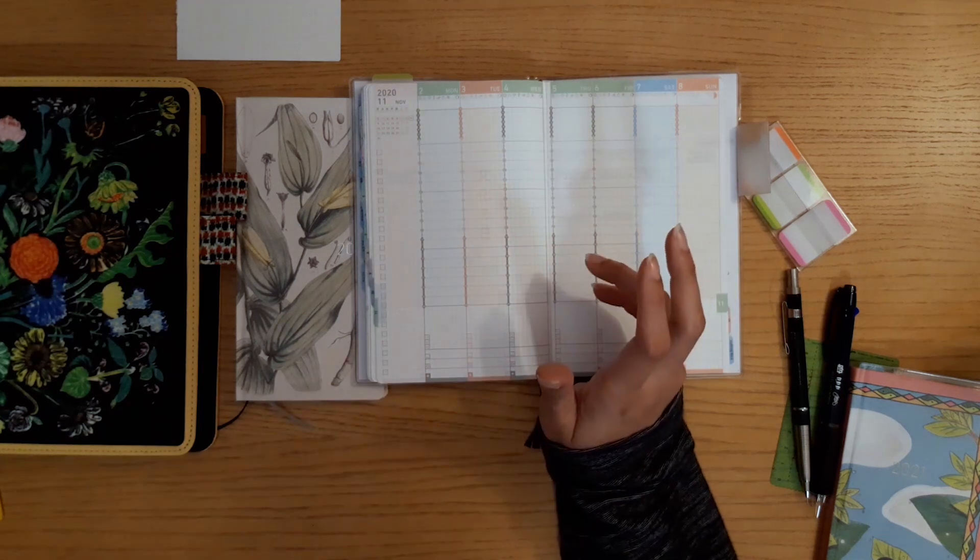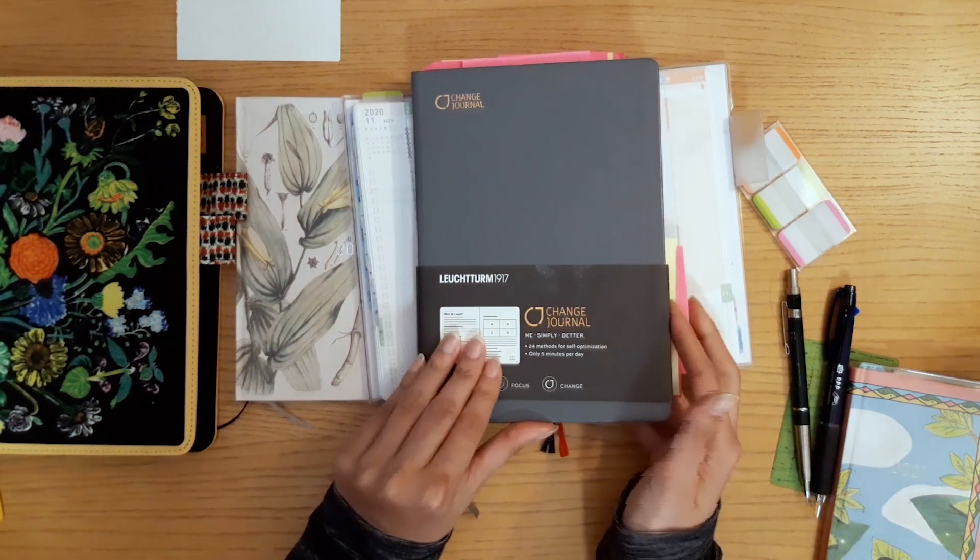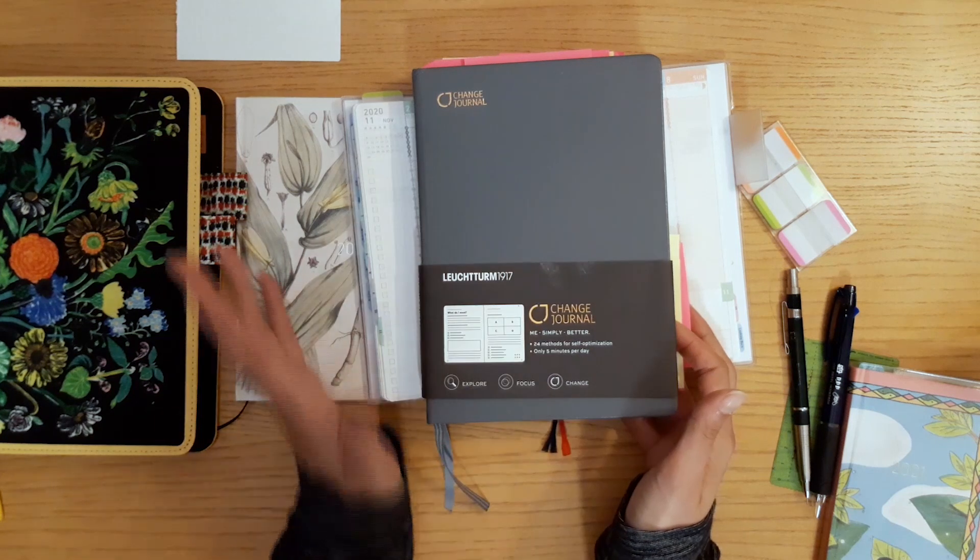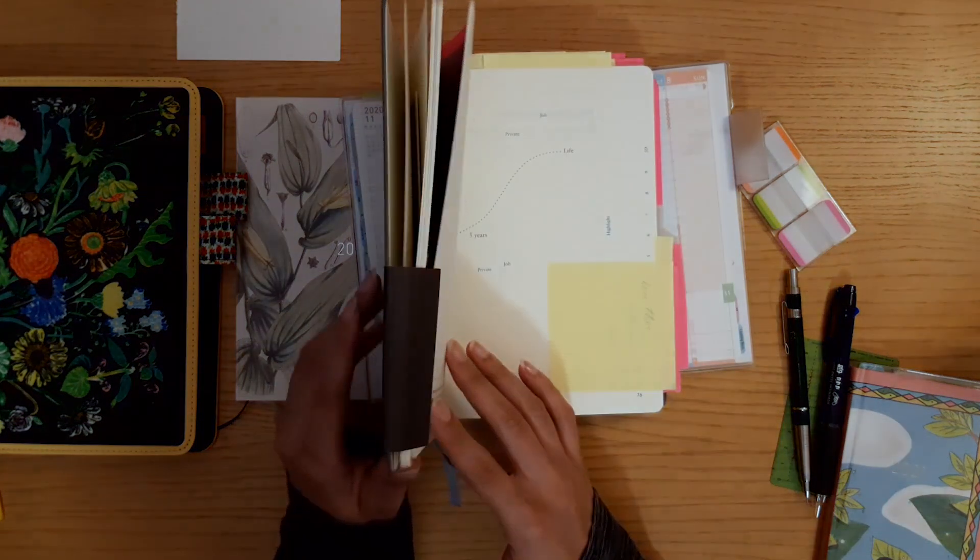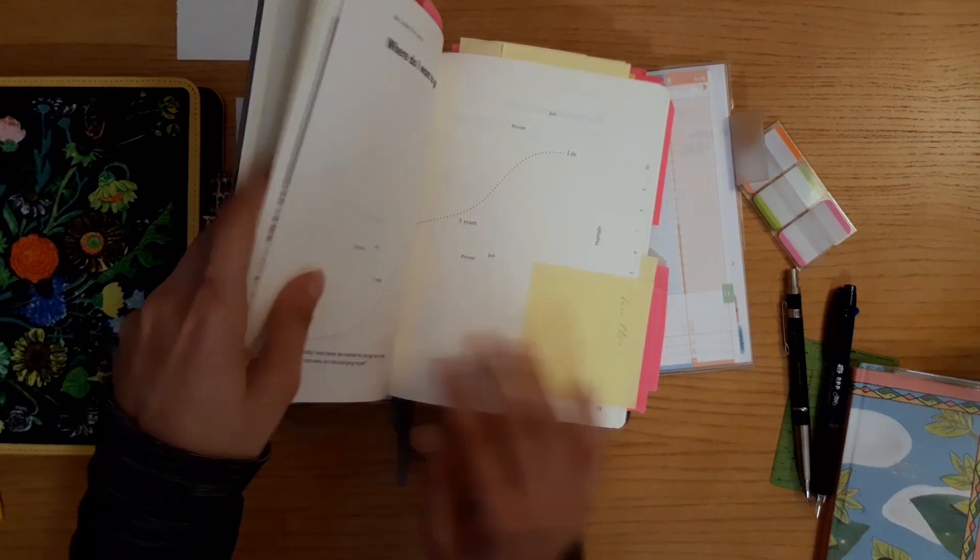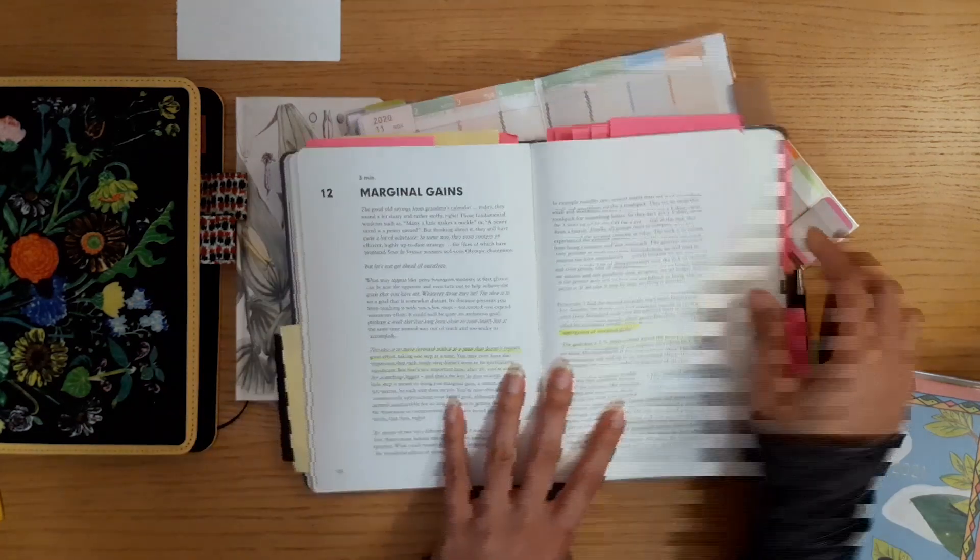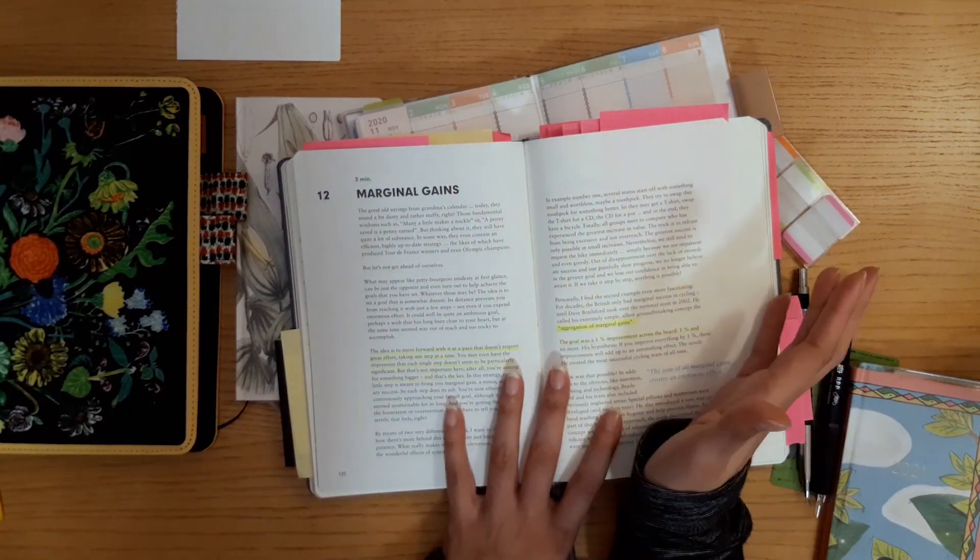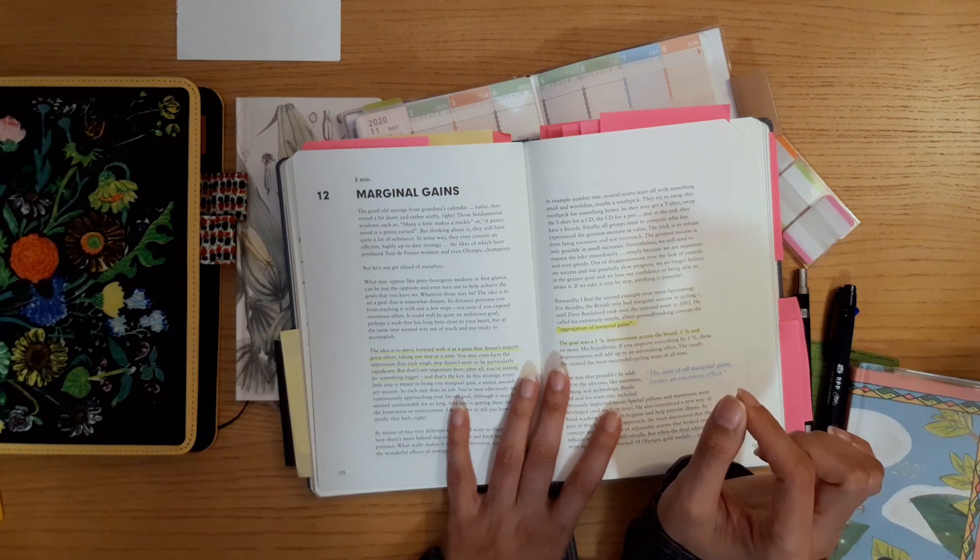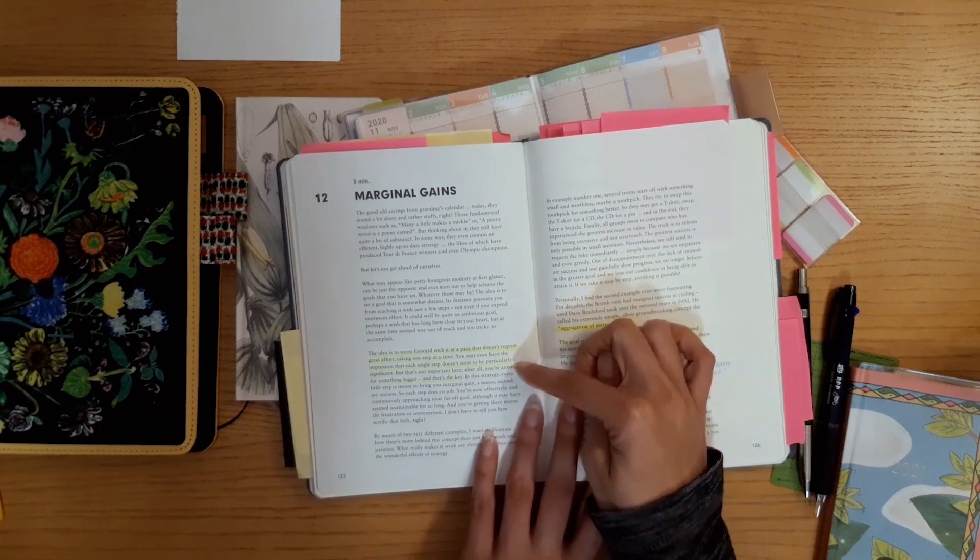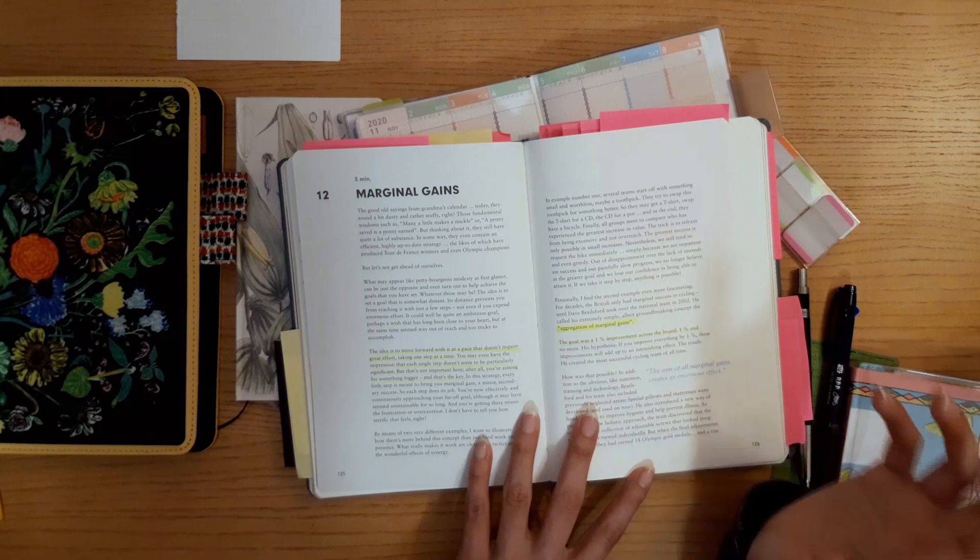I didn't have a name for this kind of planning, but then I read this - it was named Change Journal. It's from Leuchtturm. I'm going to do a review about this one, so stay tuned for that. It basically has 24 methods for self-optimization. It has a chapter about marginal gains, taking one step at a time. You may even have the impression that each single step doesn't seem to be particularly significant, but that's not important. Here, after all, you're aiming for something bigger, and that's the key: aggregation of marginal gains.